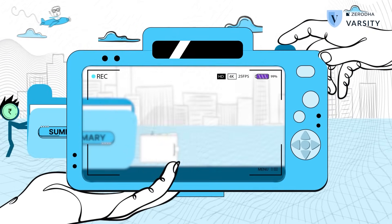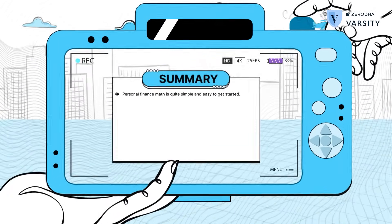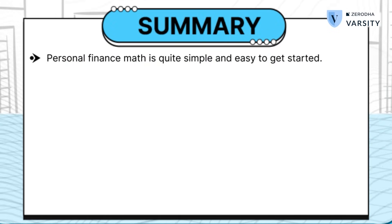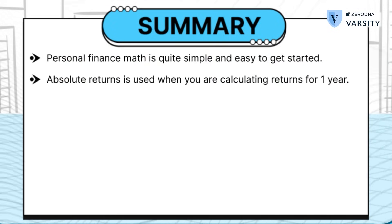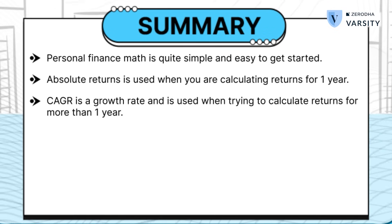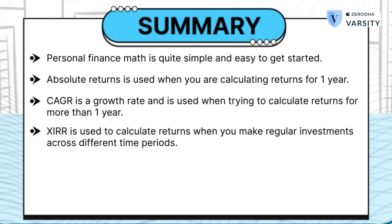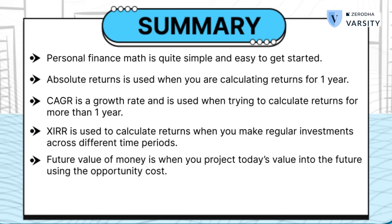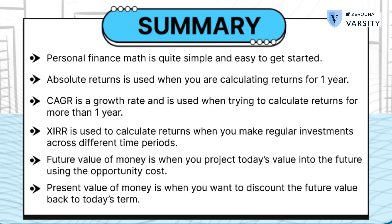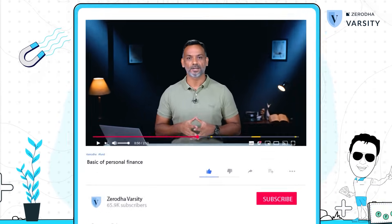Let me wrap this video with a quick summary. Personal finance is quite simple and you only need to know a handful of things to get started. Absolute return is used when calculating returns for one year. CAGR is a growth rate used when calculating returns for more than one year. XIRR is used to calculate returns when you make regular investments across different time periods. Future value of money is when you project today's value into the future using the opportunity cost. Present value of money is when you discount the future value back into today's terms. With this in place, you are now set to understand mutual funds better. Do comment if you have any queries, and in the next video we'll dig deeper into mutual funds and understand the structure of an asset management company. Stay tuned.